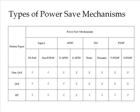Here is the matrix of all power save mechanisms supported by 802.11 protocol versus type of stations. From this slide it's clear that there are four types of power save algorithms supported. The categories are: first, the Legacy method; second, the APSD method; third, the SM method; and fourth, the PSMP method.